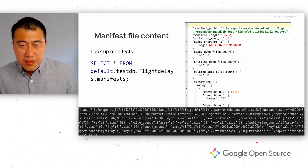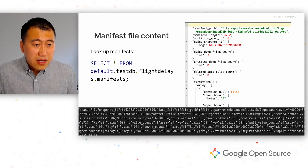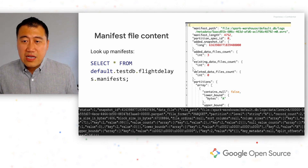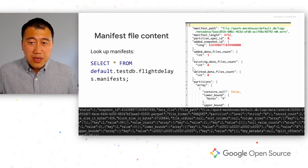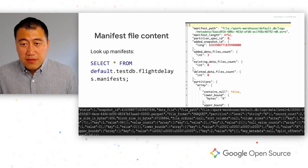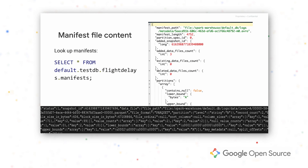The manifest list file contains manifest file paths, lengths, and partition lower and upper boundaries. Opening a manifest file reveals data file location and format, Iceberg tracking data, and values to filter files for scanning — including partition data values, per-column values, and lower/upper bounds. There are also metrics for cost-based optimization: at the file level, row counts and file sizes; at the column level, value counts, number of null values, and column size.